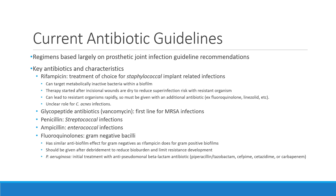Rifampicin therapy should be started after incisional wounds are dry to reduce superinfection risk with a resistant organism, as resistance to rifampicin is a serious concern and can occur rather rapidly. Because of this concern, rifampicin is typically given with another antibiotic—for example, fluoroquinolones or linezolid—to reduce that risk. It really doesn't have a clear role for C. acnes-related infections or more upper extremity shoulder-related infections. Vancomycin or glycopeptide antibiotics are the first line for methicillin-resistant Staph aureus infections. Penicillin is good for streptococcal infections, ampicillin for enterococcal infections, and fluoroquinolones are the main choice for gram-negative bacteria.